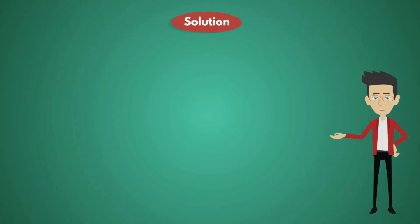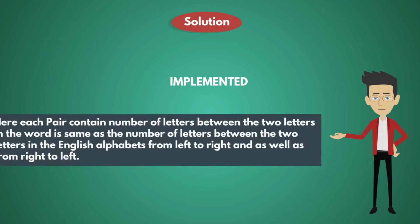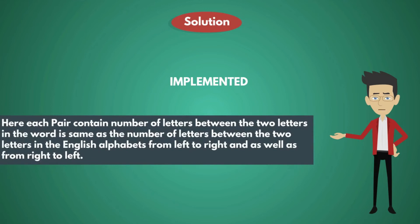Let's see the solution. The given word is I-M-P-L-E-M-E-N-T-E-D. They are asking how many such pairs of letters, forward and reverse, are there in the word. Each pair contains a number of letters between the two letters in the word that is the same as the number of letters between them in the English alphabet, from left to right as well as from right to left.